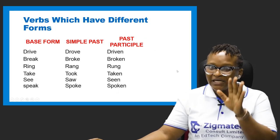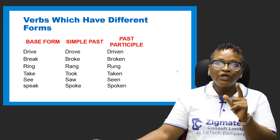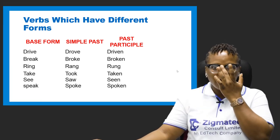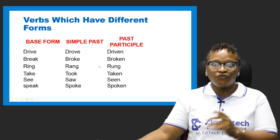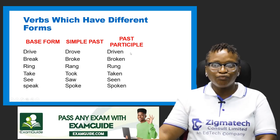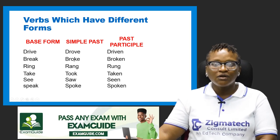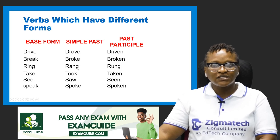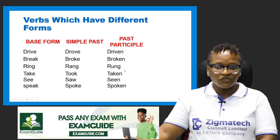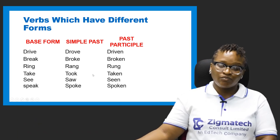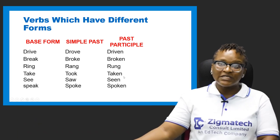Finally, verbs which have entirely different forms: drive, drove, driven; break, broke, broken; ring, rang, rung; take, took, taken; see, saw, seen; speak, spoke, spoken. So that's where we end this class.